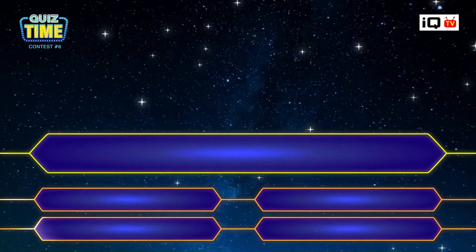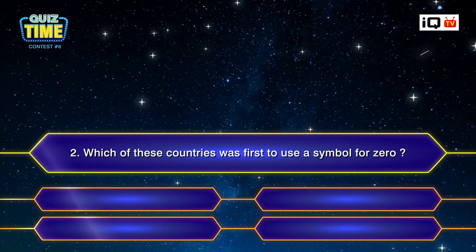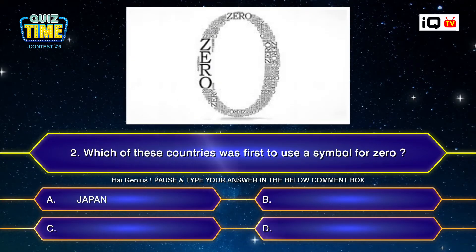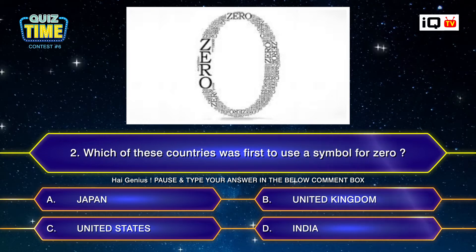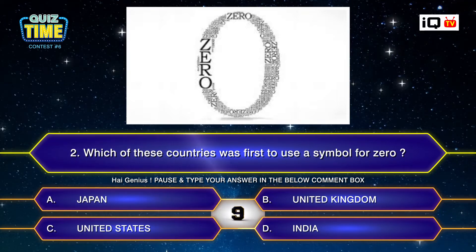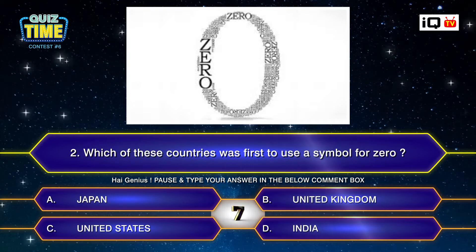Number two: Which of these countries was first to use a symbol for zero? A. Japan, B. United Kingdom, C. United States, D. India. Your time starts now. Type your answer down.